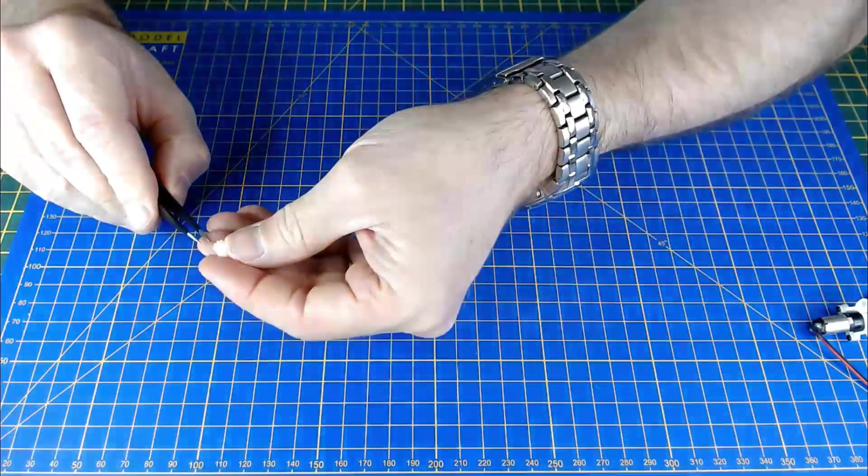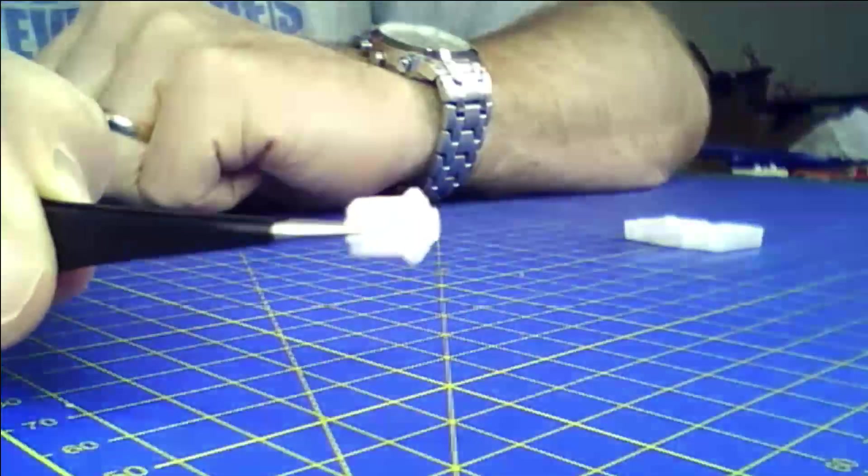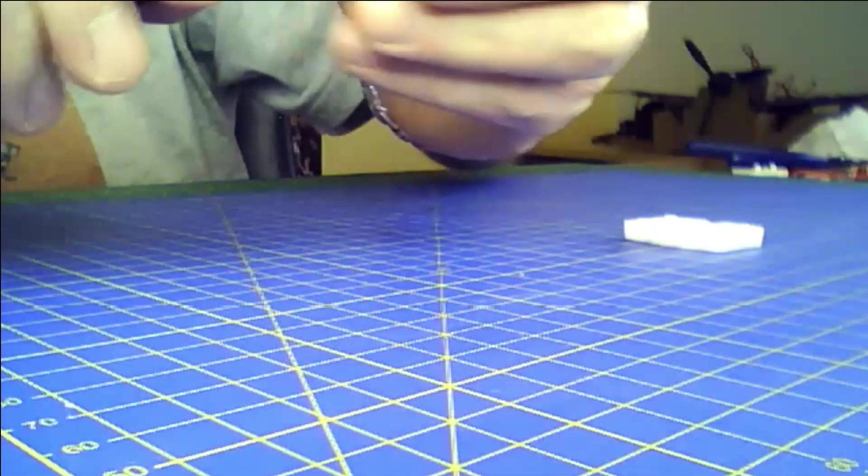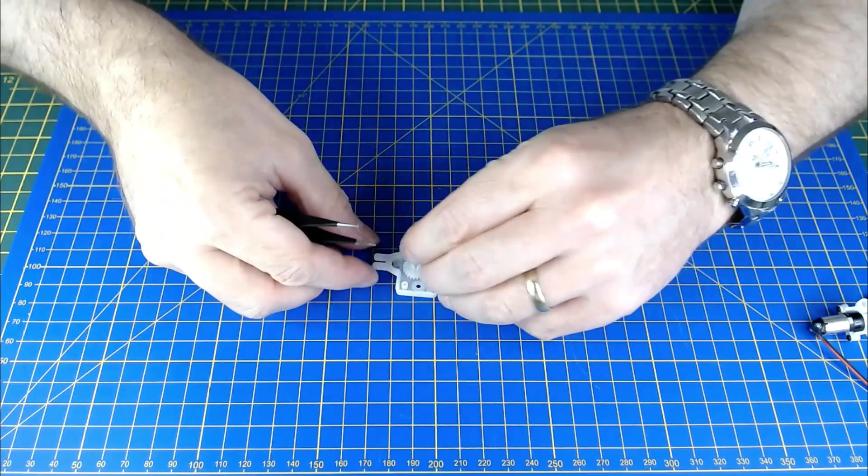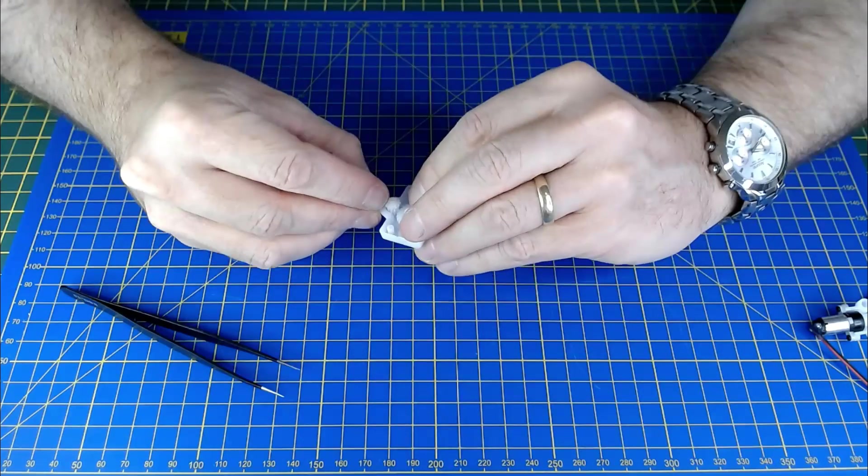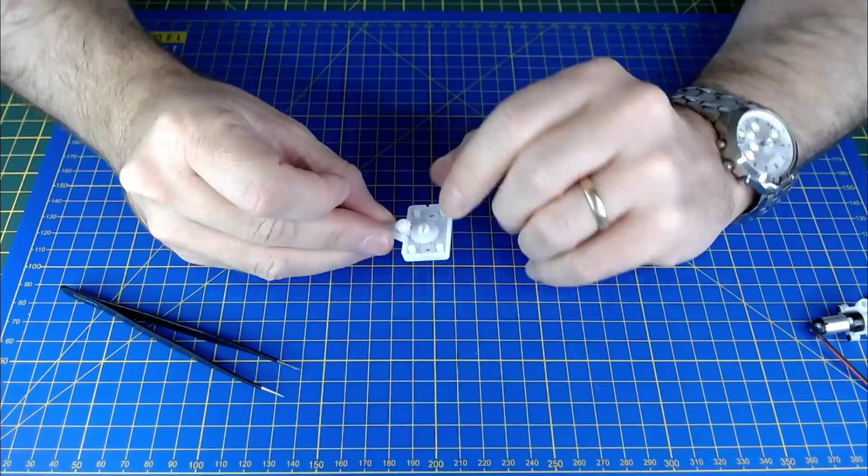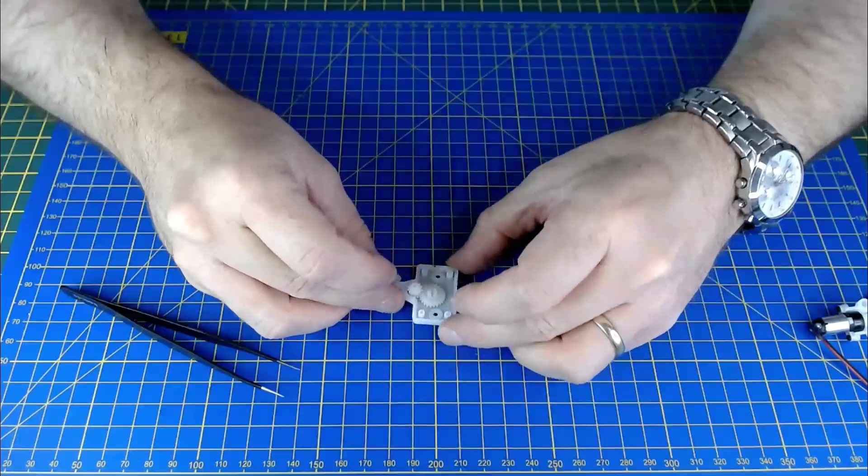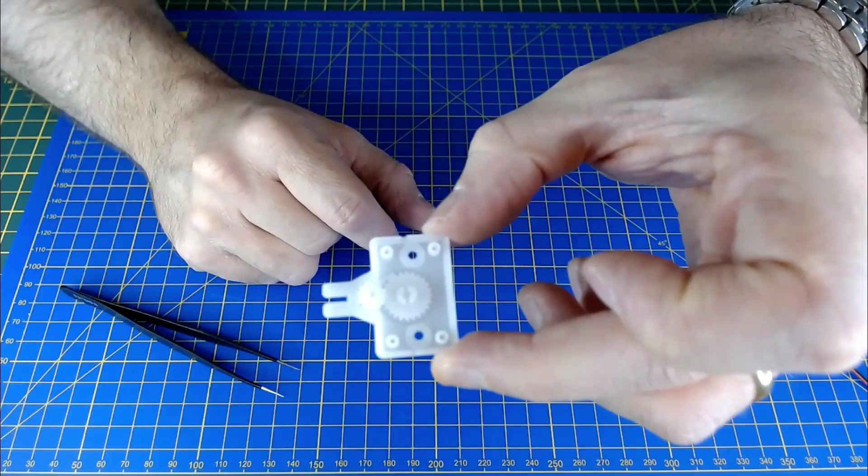And then connecting cog, just a bit like that. That has to go into there. And obviously the teeth have to mesh. It's abutted against there, and you can see that. It's a bit like that.